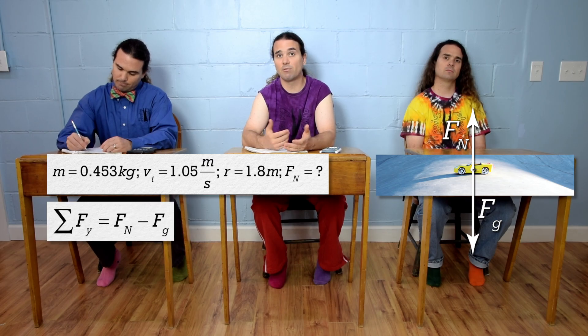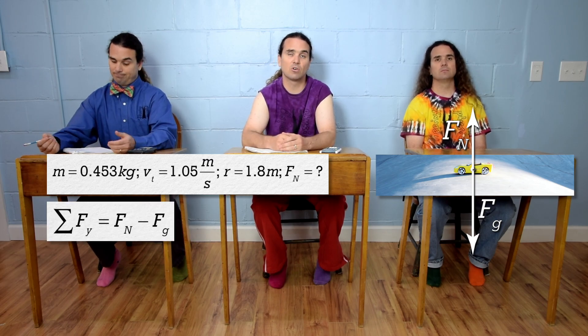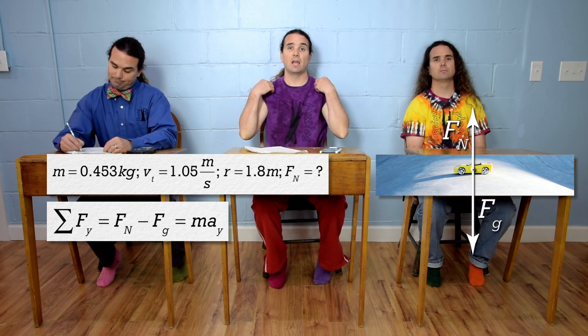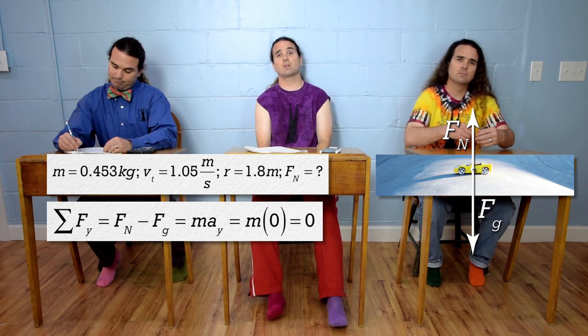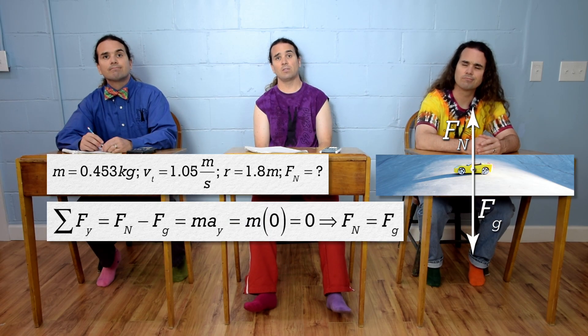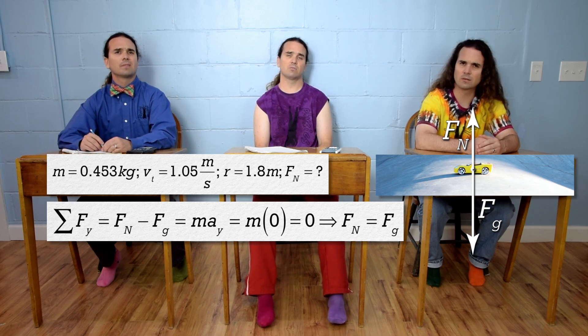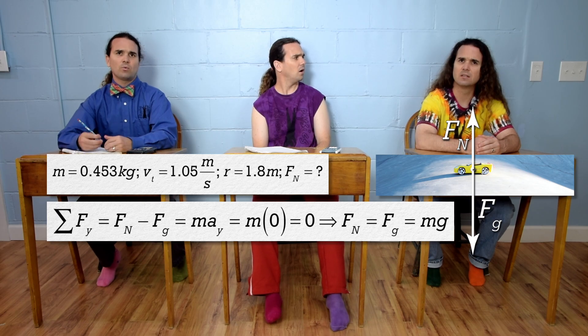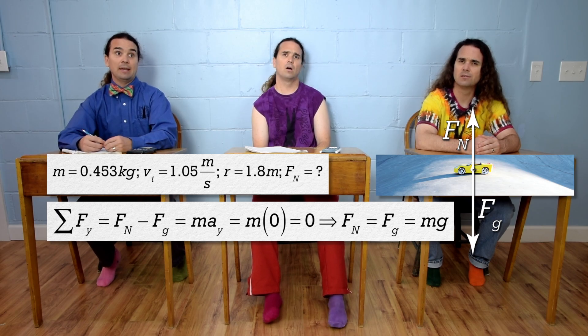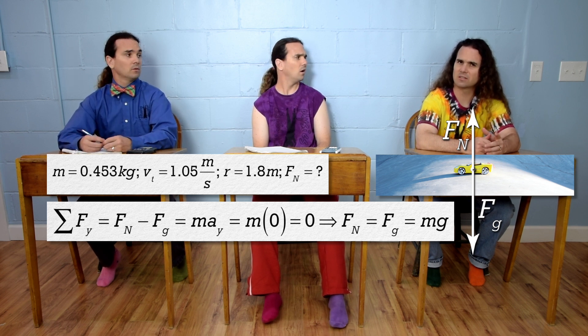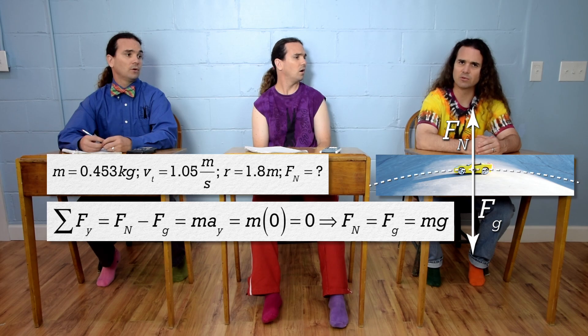The net force in the y direction equals force normal minus force of gravity, which equals mass times acceleration in the y direction. And the acceleration of the y direction equals zero. So, the force normal equals the force of gravity. We know the equation for the force of gravity, it equals mass time... Hold up, Bobby. I don't think what you're doing is right. Of course it is. We've seen this free body diagram an innumerable number of times, and the force normal always equals the force of gravity. But, we have not done this with an object moving in a circle before.